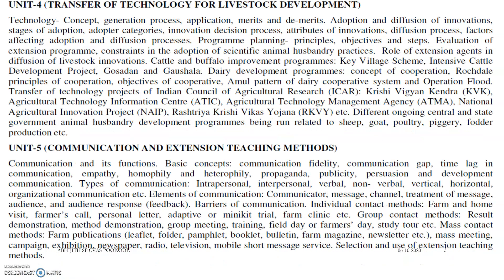In Unit 4, we will be dealing with the transfer of technology for livestock development. Many institutions have set up different plants and technologies, and these agencies implement them in agricultural rural areas to improve production quality. Topics include cattle and buffalo improvement programs, evaluation of buffalo and species, and the role of extension agents in diffusion of livestock innovations. We will also cover agencies such as AMOOL, ICAR, ATMA, KVK, RKVY, Yojanas, and innovation projects conducted by the nation.